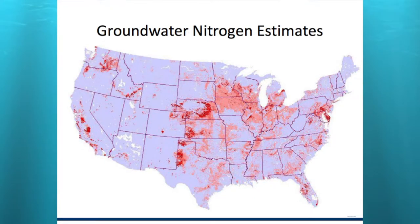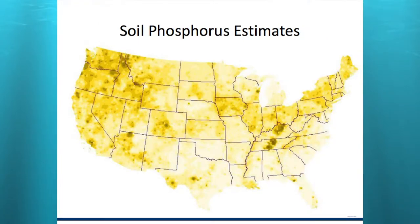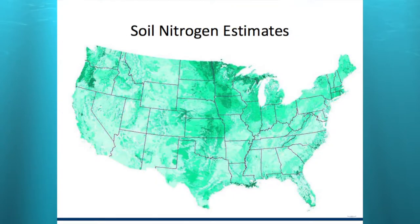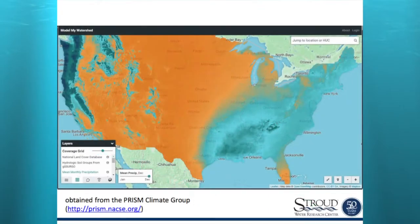We pull on USGS base flow estimates, national groundwater nitrogen data, and national datasets of that nature. Soil phosphorus estimates are based on soil types. Soil nitrogen estimates are driven by a combination of soil type and land cover. There's also something called PRISM, which uses radar imagery to generate very detailed precipitation estimates. Those are now being accessed by the model.